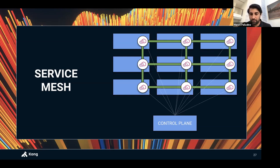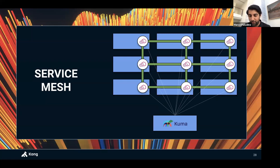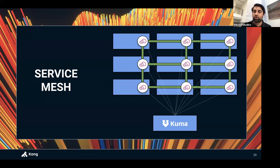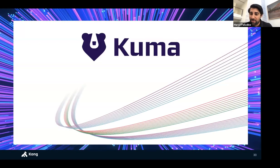The control plane has different implementations, each with pros and cons. One of them, which we're addressing today, is Kuma. Kuma is also a project in the process of being donated to the CNCF Foundation as a sandbox project. The goal of Kuma is to be a vendor-neutral, open control plane built on top of Envoy.